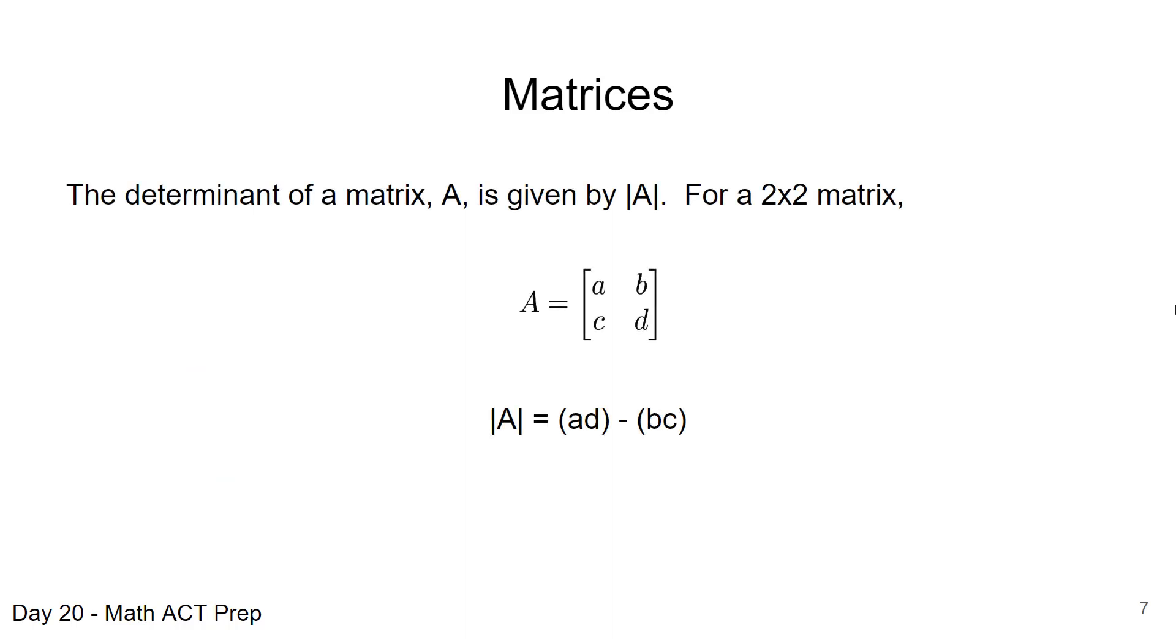One other application for matrices that you might see on the ACT is the determinant of a matrix. And we have seen different forms of this question. Sometimes they just give you a matrix and say, find the determinant. Other times they will give you this formula right here. And here's what the determinant of a matrix is. You're going to be given a 2 by 2 matrix in this case. We can find determinants of others, but I just have never seen anything beyond a 2 by 2 on the ACT. In this case, we have the formula. Determinant is given by, it looks like the absolute value bars around the A. So just be familiar. Or you may see DET in front of A.